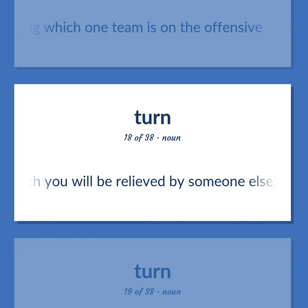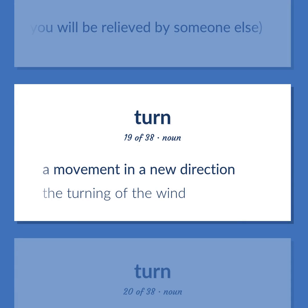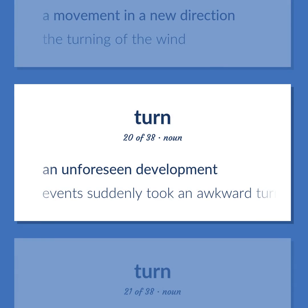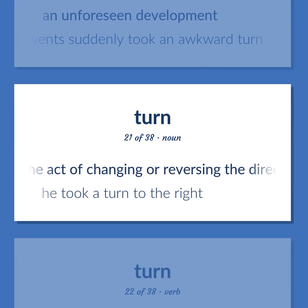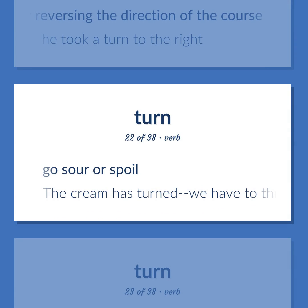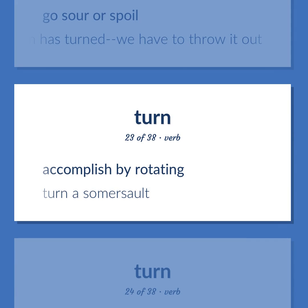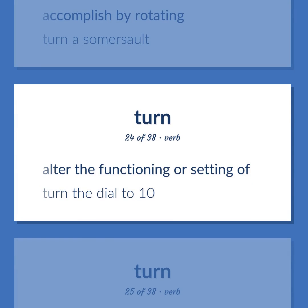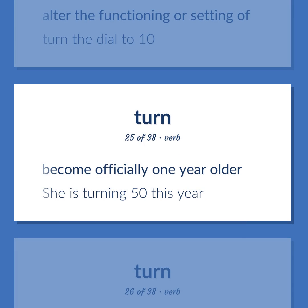Turn. Definition: A movement in a new direction. Example: The turning of the wind. Definition: An unforeseen development. Example: Events suddenly took an awkward turn. Definition: The act of changing or reversing the direction of the course. Example: He took a turn to the right. Definition: Go sour or spoil. Example: The cream has turned; we have to throw it out. Definition: Accomplish by rotating. Example: Turn a somersault. Definition: Alter the functioning or setting of. Example: Turn the dial to 10. Definition: Become officially one year older. Example: She is turning 50 this year.